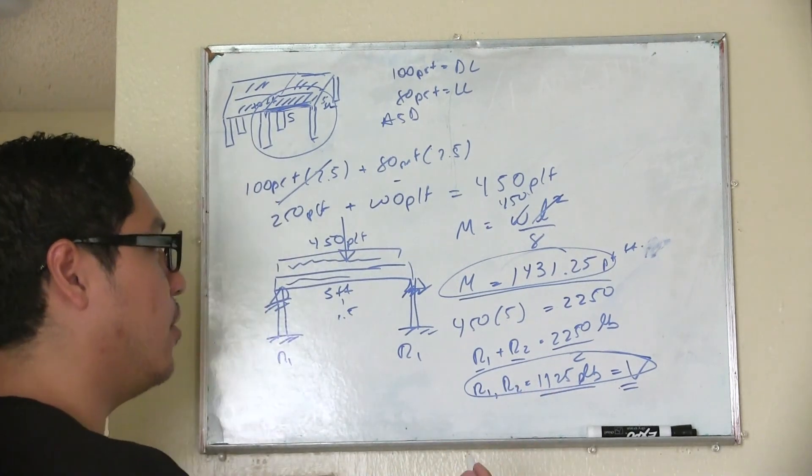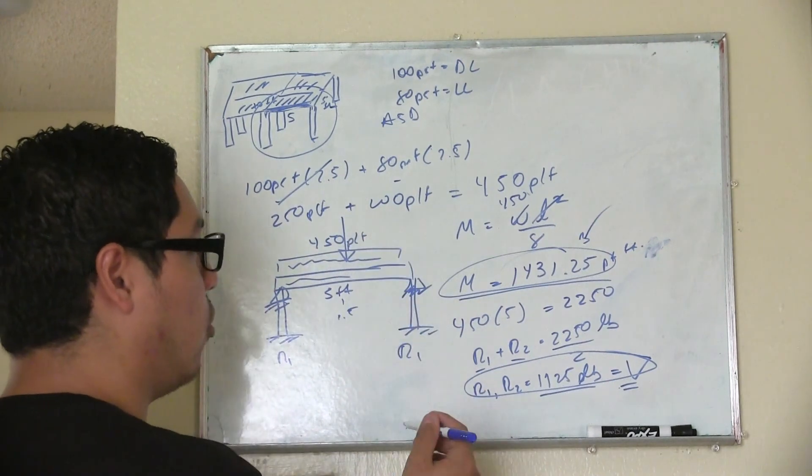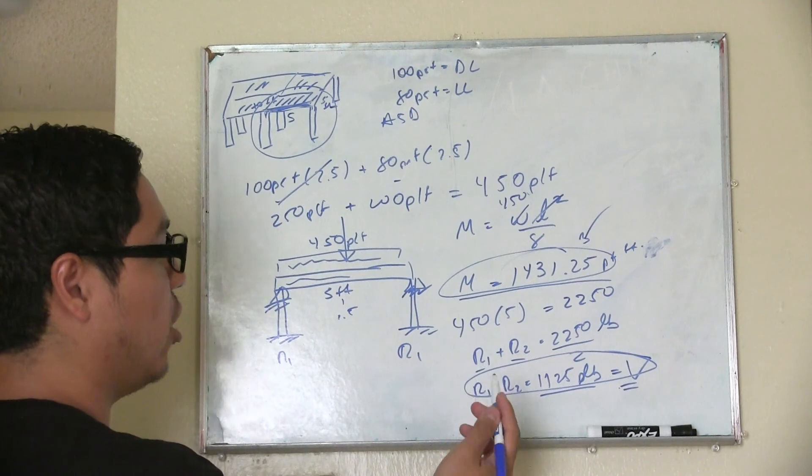Then, usually when you are designing a beam, you first check for moment, because that's usually the one that's going to govern the design. Then after you design this, you need to check for your deflection.